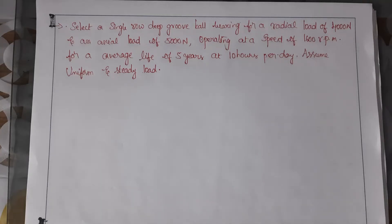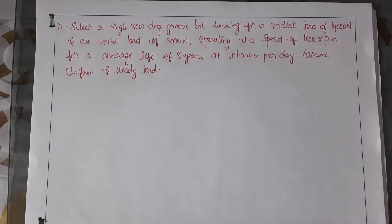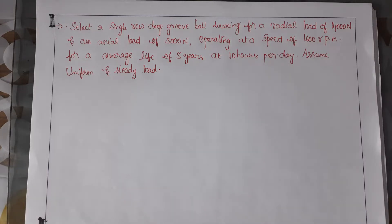Hello students. This is another problem where only the type of bearing is mentioned, not the number. Here we need to select a single row deep groove ball bearing for a radial load of 4000 Newtons and axial load of 5000 Newtons, operating at a speed of 1600 RPM. We need to find out which bearing number will be suitable.